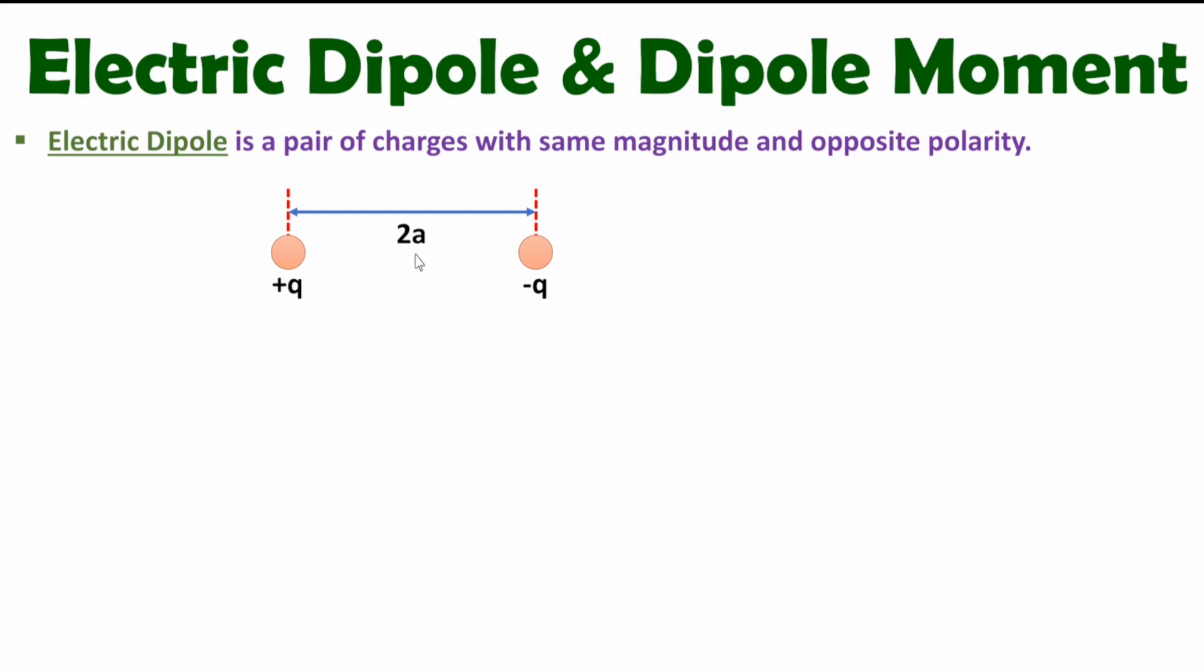In standard notations, you will observe spacing between two charges is given by distance 2a. So this is electric dipole having two charges with same magnitude and opposite polarity.